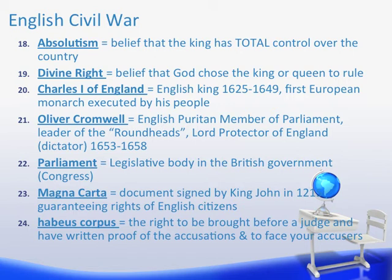Oliver Cromwell was an English Puritan member of Parliament and the leader of the Roundheads. He had a strong belief in democracy and fought the English Civil War to establish democracy in England. However, he rules as Lord Protector of England from 1653 to 1658, where he is pretty much a dictator. Parliament is the legislative body in the British government — it's similar to our Congress; they're the ones that pass laws. The Magna Carta is a document signed by King John in 1215, and it guaranteed the rights of English citizens, the biggest being habeas corpus — the right to be brought before a judge and have written proof of the accusations and to face your accusers. So if somebody was accusing you of a crime, you got to see them face-to-face and challenge that accusation.